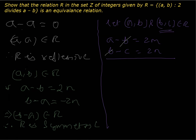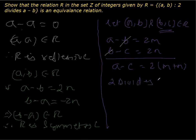As a result we get a minus c, and taking 2 common it becomes 2(m + n). It is 2 times the sum of two integers, so it implies that a minus c is divisible by 2. Therefore 2 divides (a - c), which means (a, c) belongs to R, and therefore R is transitive.